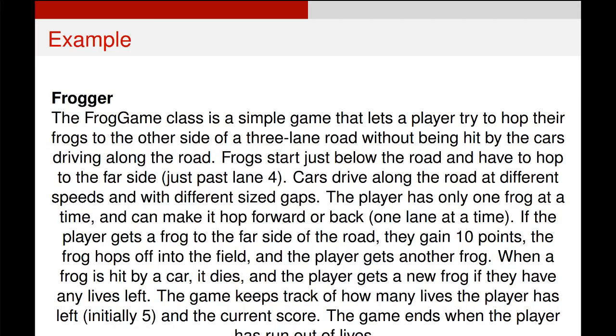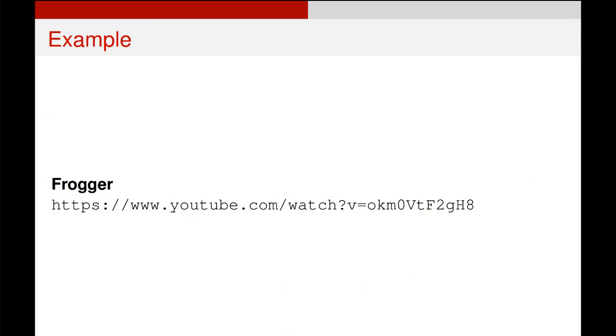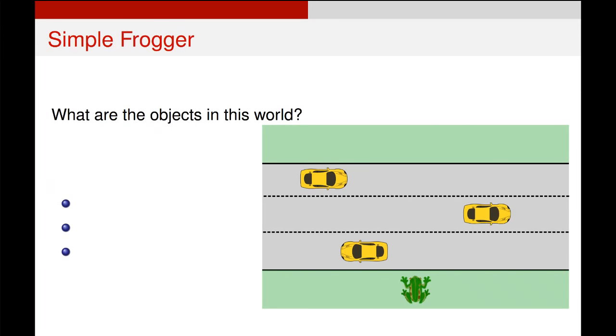We're going to use the game Frogger, which was a 1980s hit. Essentially, it is a game where you control the movement of a frog across a three or four lane motorway. Cars go left and right on the motorway down their individual lanes, and you control when the frog hops. You win if you get across to the top side of the motorway.